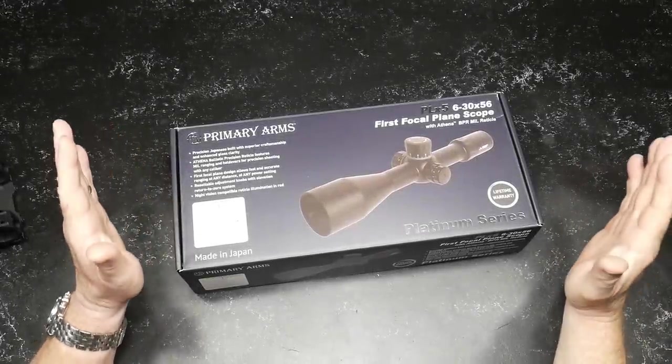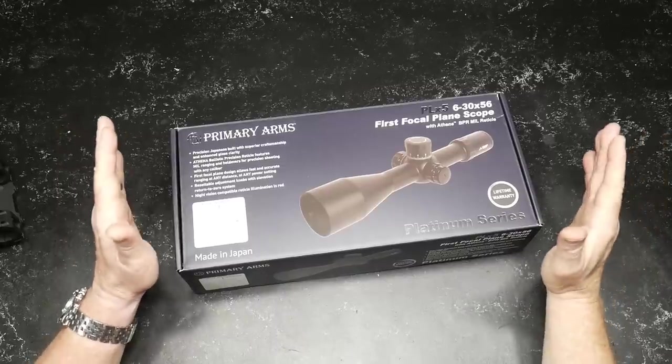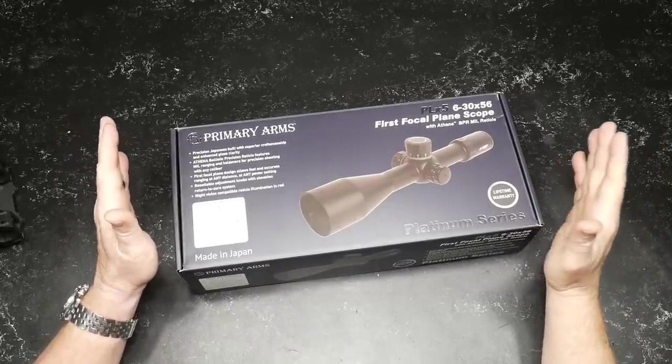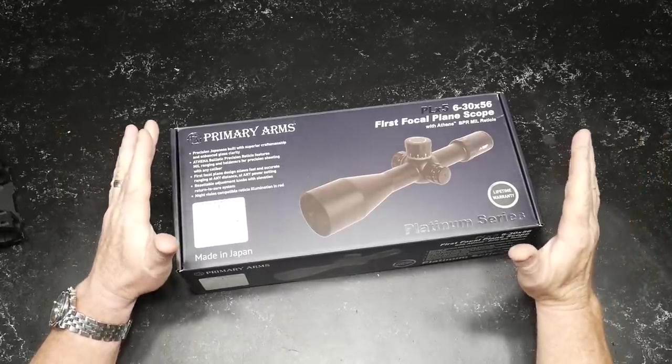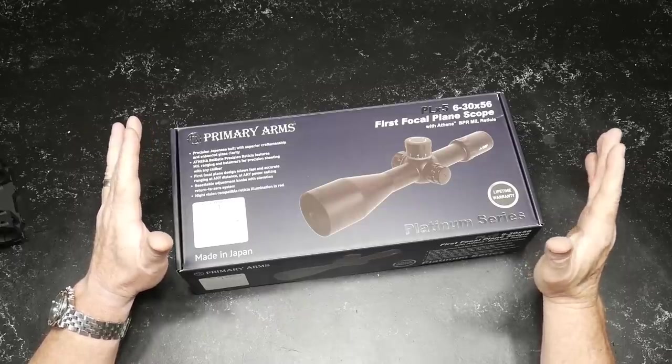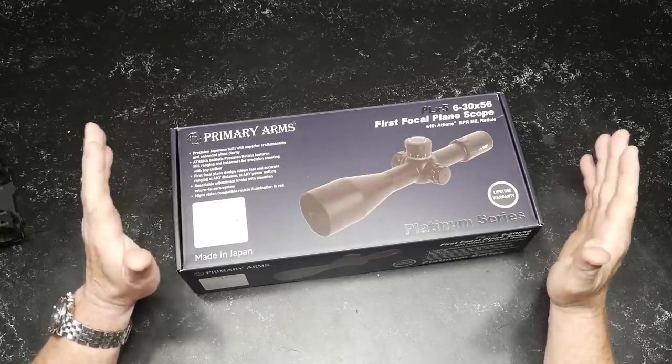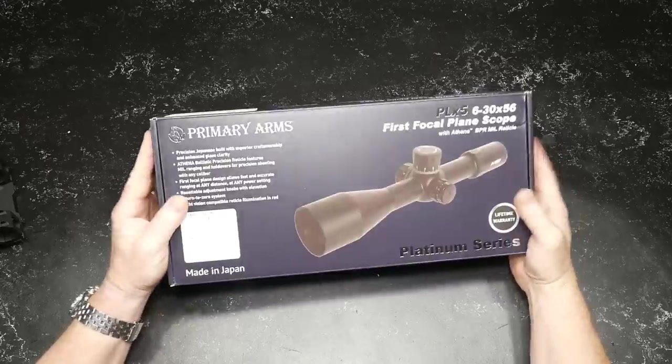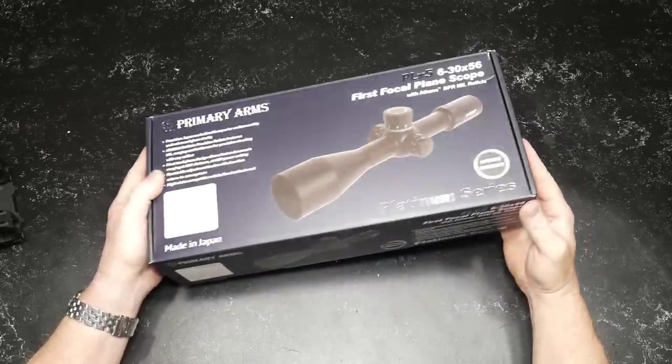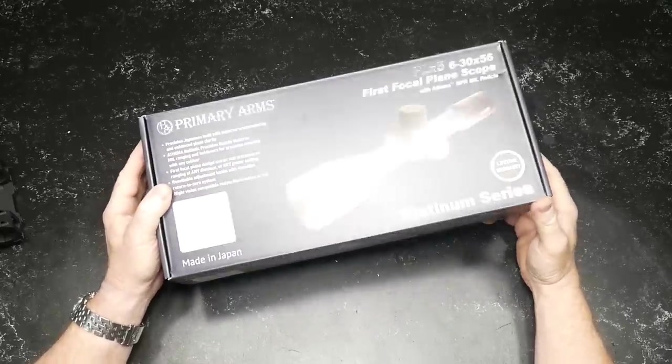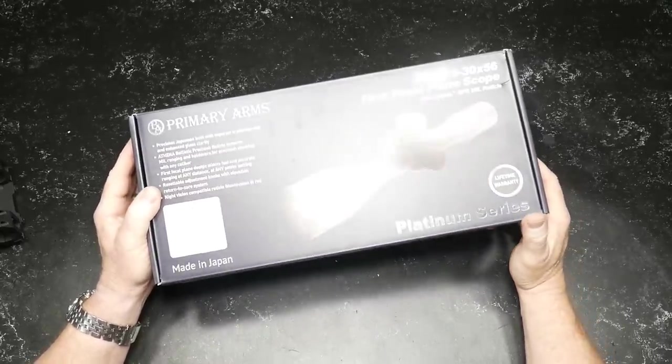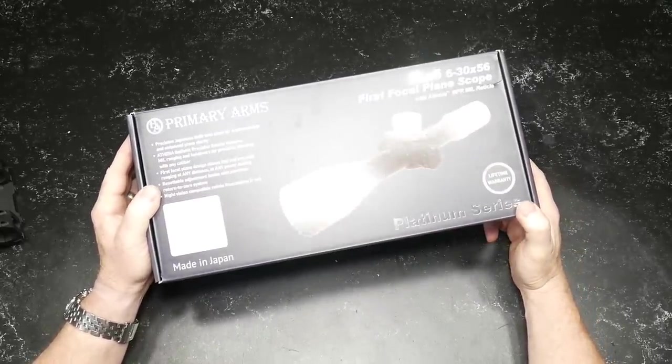All right guys, GoodBoy32 here. Check it out. This is the box opening and review, part one of a two-part series on the Primary Arms Platinum 6 to 30 by 56 first focal plane scope with the Athena BPR reticle.